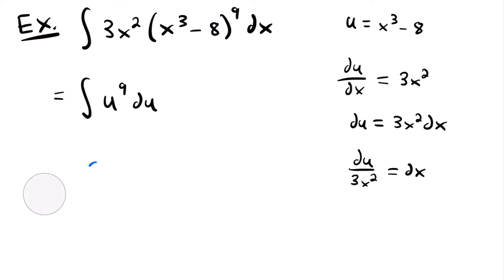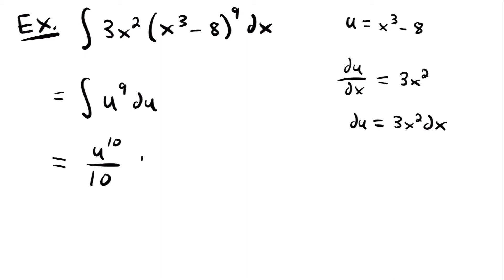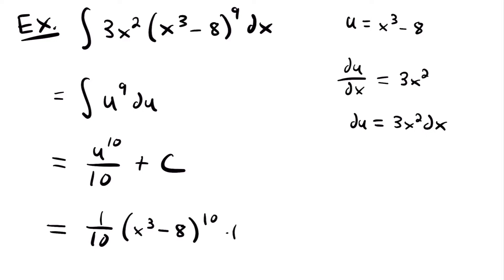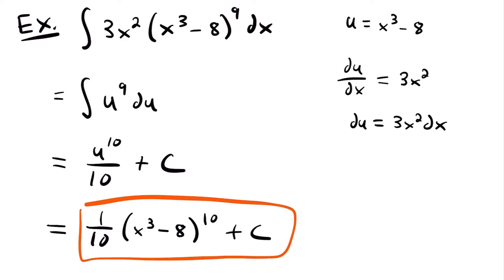Going back to solving our integral, we apply the power rule of integration to u to the ninth power: add 1 to the exponent to get u to the 10th power, then divide by 10, plus c. Now that we've integrated with respect to u, we replace u with what we set it equal to. This gives us 1/10 times x cubed minus 8 to the 10th power plus c. That is the answer to this integral.